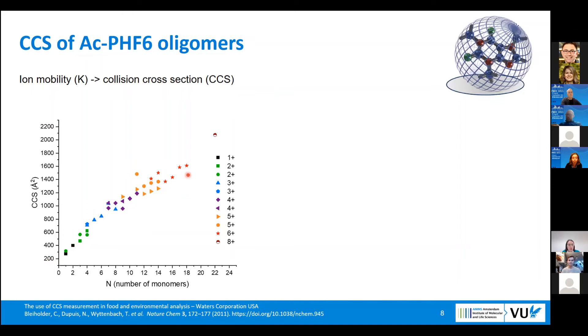Of course, as oligomers become larger and larger, the CCS value is also increasing. But what is interesting to notice: for example, for tetramer, we have species that are doubly charged, the green ones, but we also have triply charged, the blue ones. Within one charge state, they have different conformations. One is more compact and the other one is more extended.